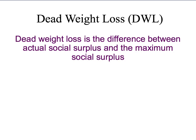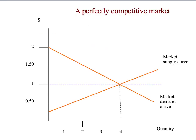The first thing we need to do is think about a market and work out what is the maximum social surplus you can get. Let's start off with a perfectly competitive market. We have dollars on the vertical axis, quantity on the horizontal axis. We have our market demand curve and our market supply curve, and our initial equilibrium is where they cross at a price of $1 and a quantity of 4. We're going to assume there are no external costs and no external benefits in this market. Given that assumption, my claim is that the perfectly competitive market outcome — this equilibrium at a price of $1 and most importantly a quantity of 4 — is an outcome that maximizes social surplus.